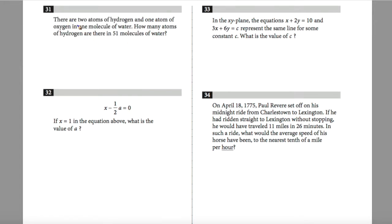Question 31 states, there are two atoms of hydrogen and one atom of oxygen in one molecule of water. How many atoms of hydrogen are there in 51 molecules of water? Well, there is a 2 to 1 ratio, so 102 molecules of hydrogen exist within 51 molecules of water. Basically, I'm doing 51 times 2 to get my two atoms of hydrogen per molecule.